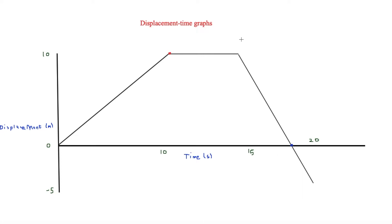Then for the next 5 seconds they are remaining stationary. A straight horizontal line in a displacement-time graph shows that they are stationary. In a velocity-time graph this is different, which I'll show you next, but for a displacement-time graph this means it is stationary.